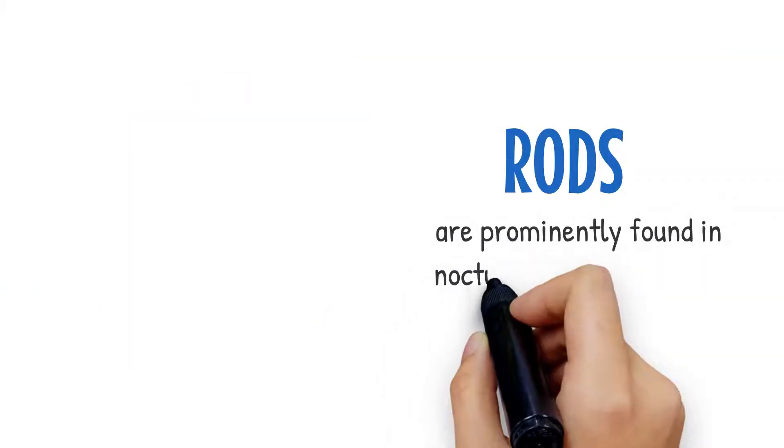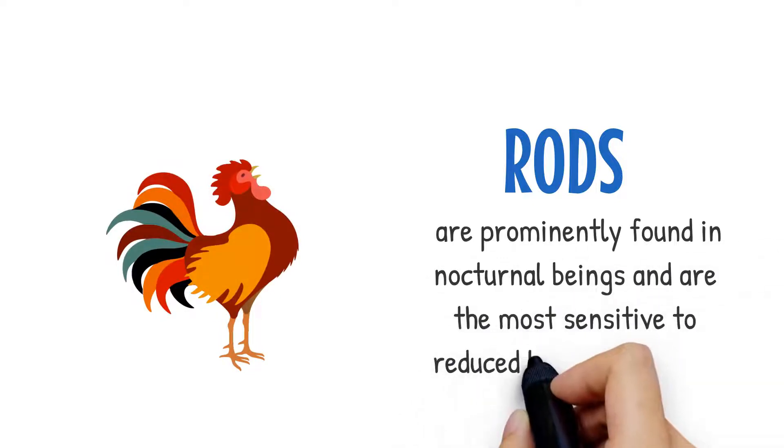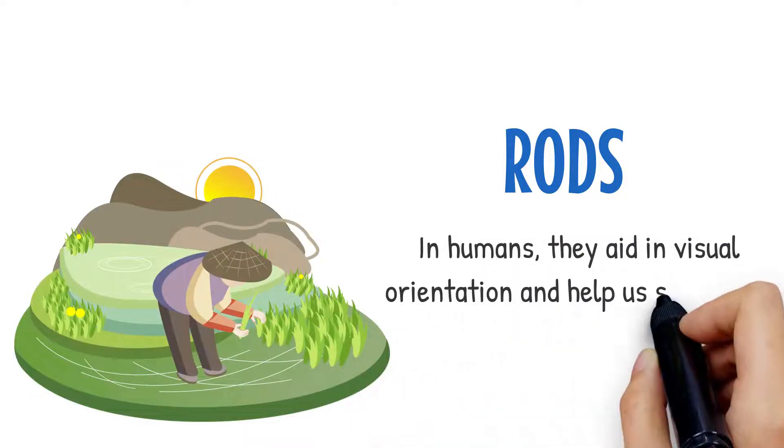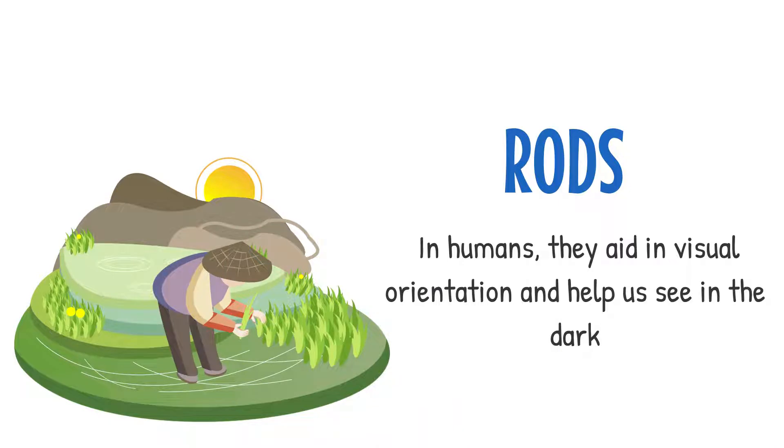Rods are prominently found in nocturnal beings and are the most sensitive to reduced light intensities. In humans, they aid in visual orientation and help us see in the dark.